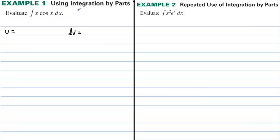To choose u, you usually want to pick the function that, if you took enough derivatives, would go to zero. The derivative of x is one, and the derivative of one is zero. So we're going to choose u to be x.